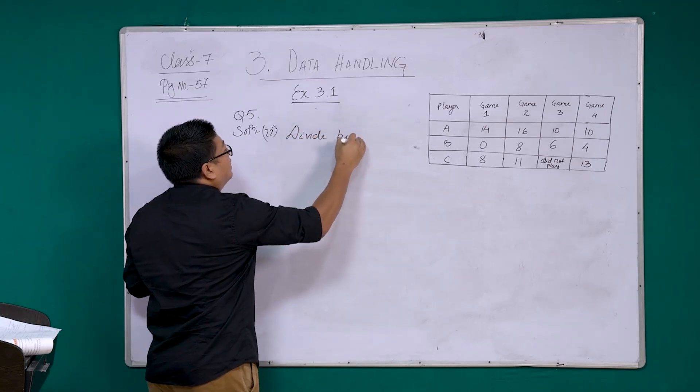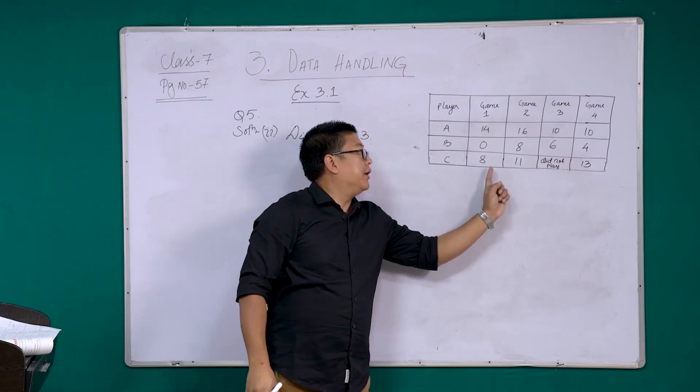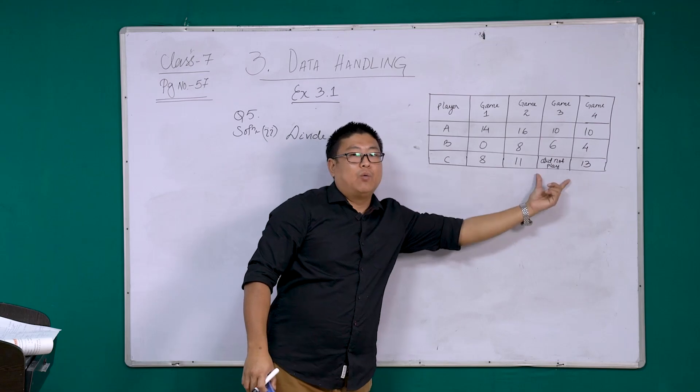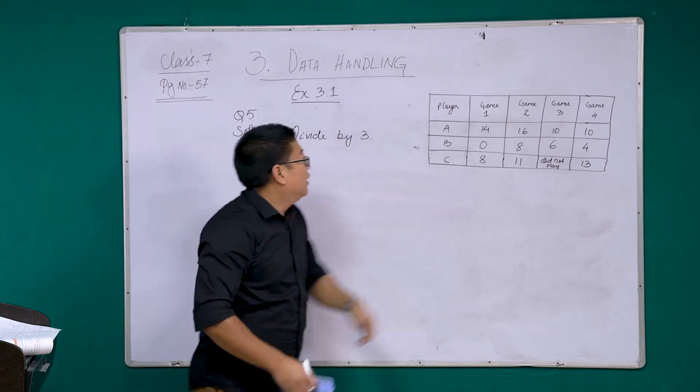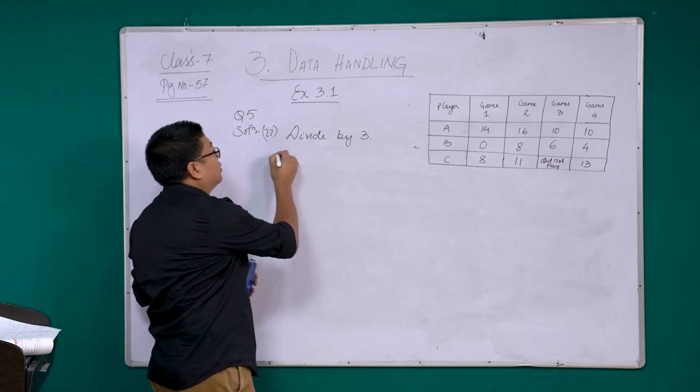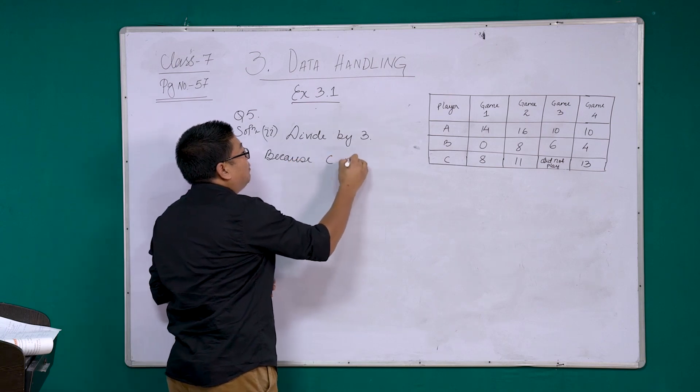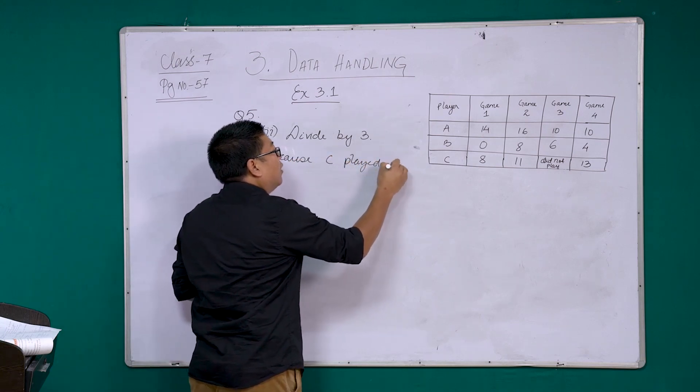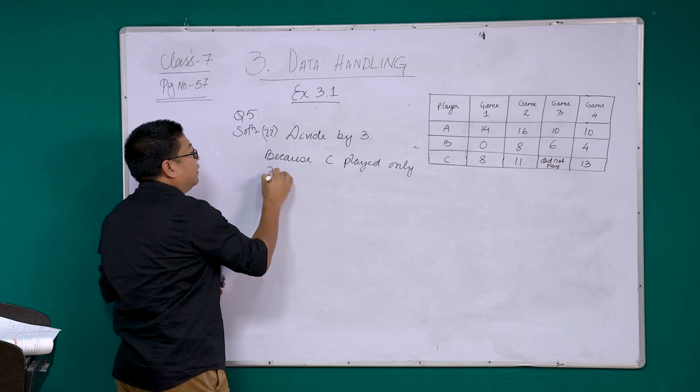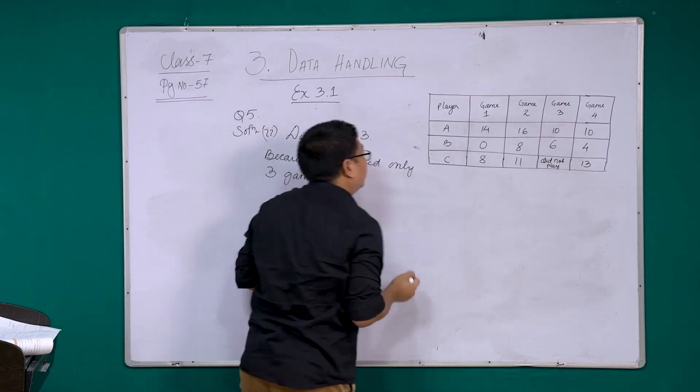So we have 1, 2, and 3 observations. So we are going to divide only by 3. Because the total observations are only 3. In one game, C did not play. And the other part of the question, why? Why is because, as already stated, because C played only 3 games.